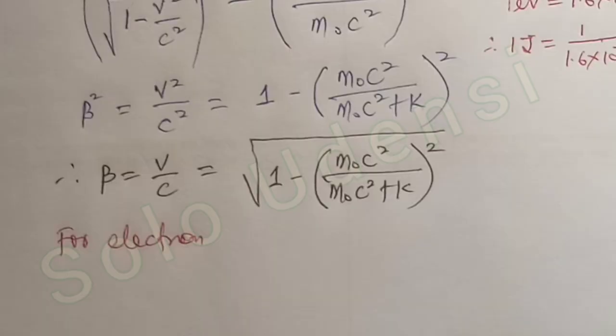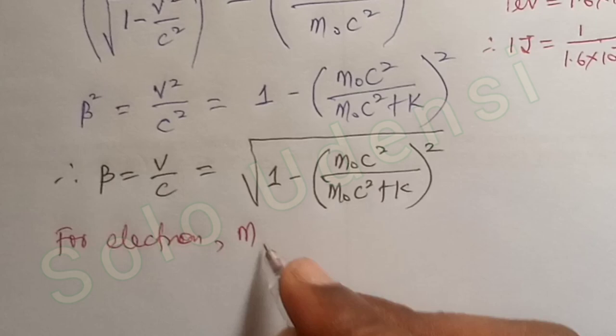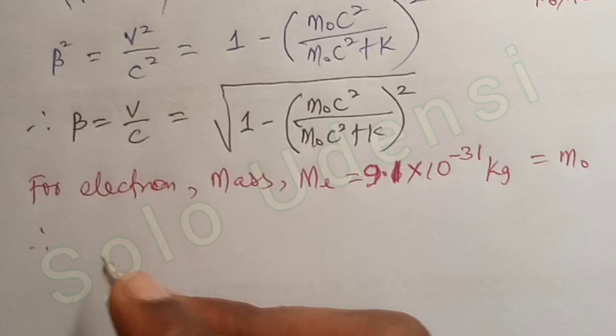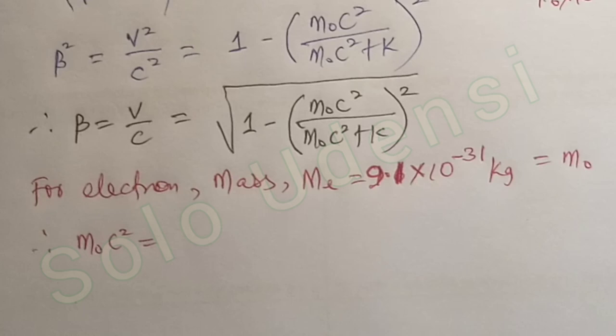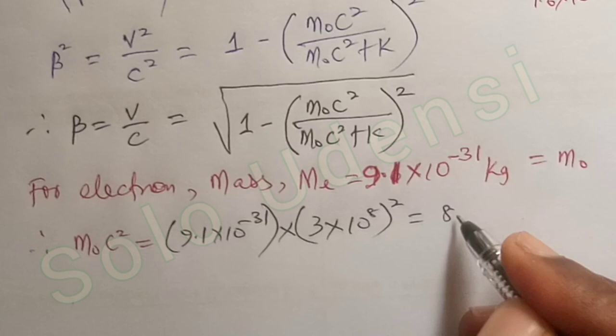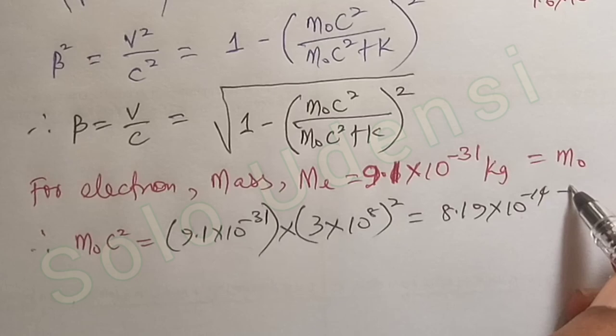Remember, M₀c² for an electron is 8.19 times 10 raised to the power minus 14 joules.